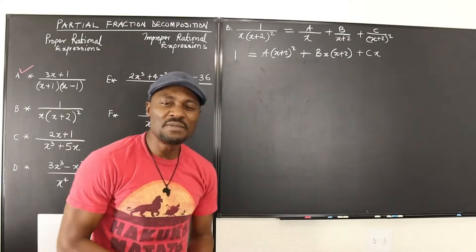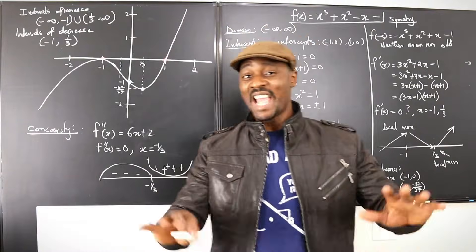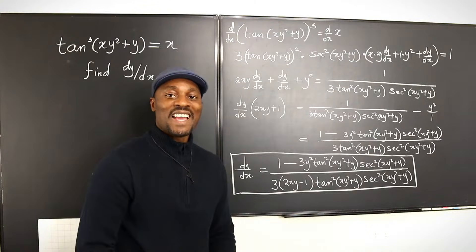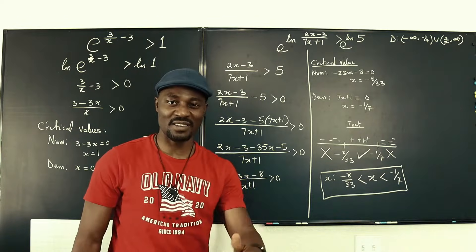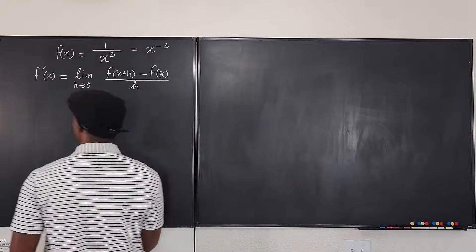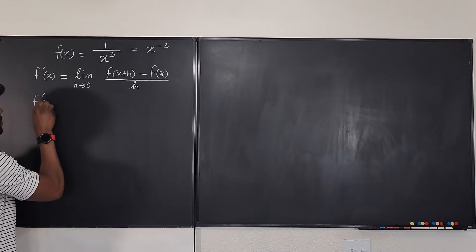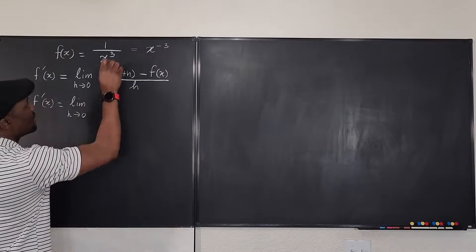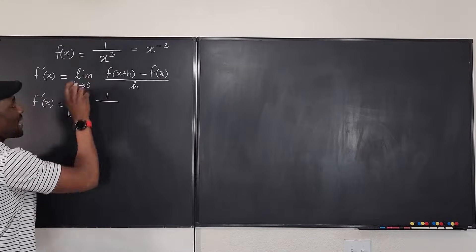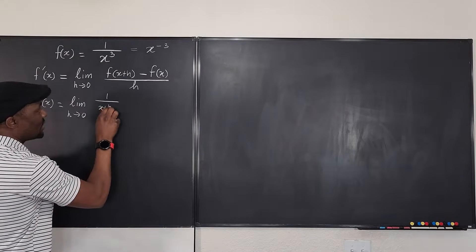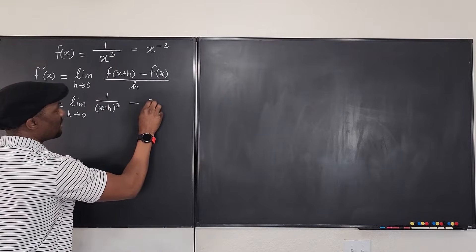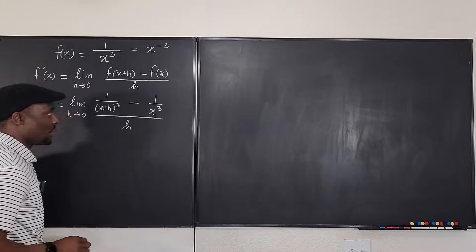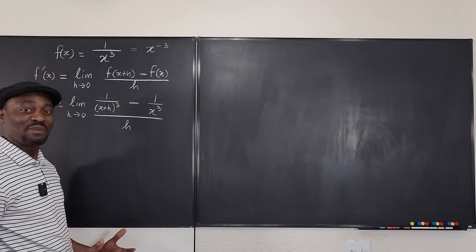Let's get into it. Using the definition of the derivative, we're going to say that f prime of x equals the limit as h goes to 0 of: 1 over (x plus h) cubed, minus 1 over x cubed, all divided by h. What comes after this is how well you can simplify algebraic expressions.